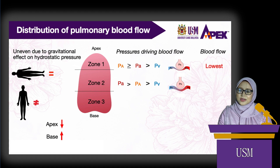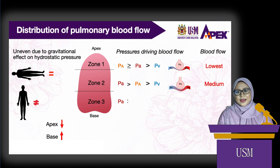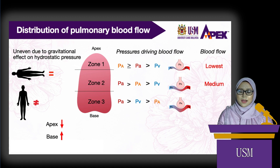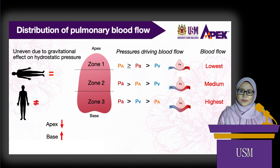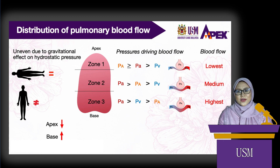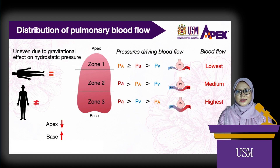In zone 3, the pattern is more familiar. The gravitational effect increases both arterial and venous pressures, and they are both higher than alveolar pressure. So similar to other vascular beds, blood flow to zone 3 is driven by the difference between arterial and venous pressure. So in zone 3, more capillaries are open and blood flow is the highest. Throughout the lungs, perfusion is highest at the base and lowest at the apex.